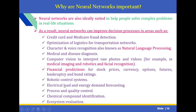Why are neural networks important? Neural networks are ideally suited to help people solve complex problems in real-time situations. As a result, neural networks can improve decision-making in areas such as credit card and Medicare fraud detection, optimization of logistics in transportation networks, character and voice recognition (popularly known as natural language processing), medical and disease diagnosis, computer vision to interpret raw photos and videos (including medical imaging, robotics, and facial recognition), financial prediction for stock prices, currency, options and futures, and bond ratings. Other applications include robotic control systems, electrical load and energy demand forecasting, process and quality control, chemical compound identification, and ecosystem evaluation.